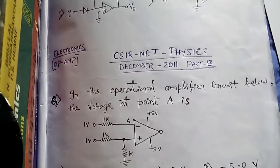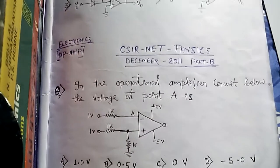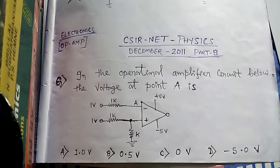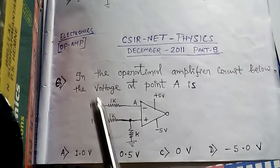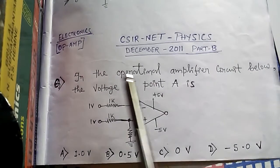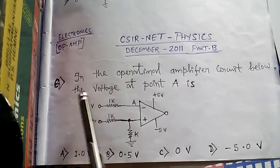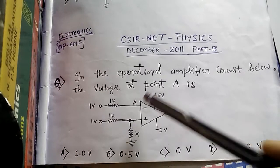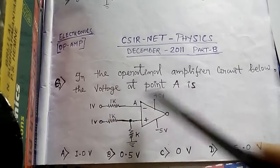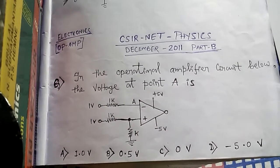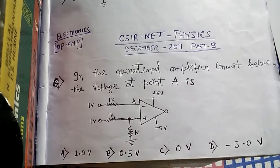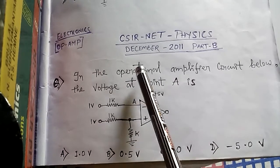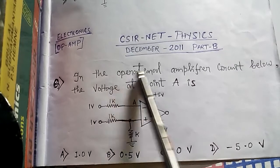Hey friends, this is Vidhan. Welcome to my channel. Today we will see a problem from Electronics December 2011 Part B: in the operational amplifier circuit below, what is the voltage at point A? It is a straightforward question.